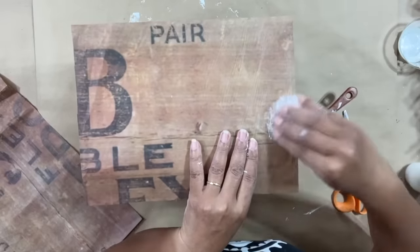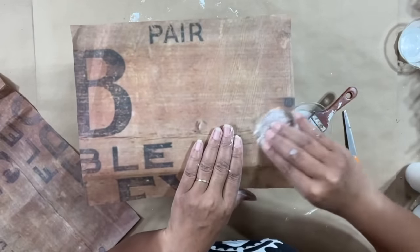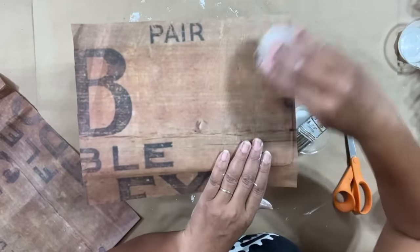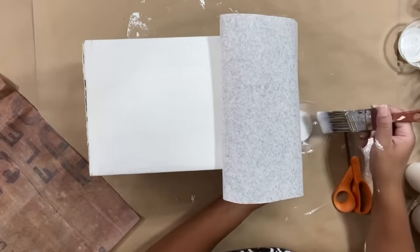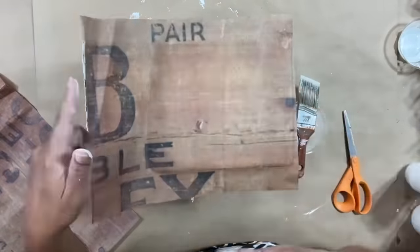Now I'm going to have a few wrinkles, but I'm not going to stress about those because once the paper dries, those wrinkles will go away. Fold this back and do the next section. Let's get the rest of this decoupaged.